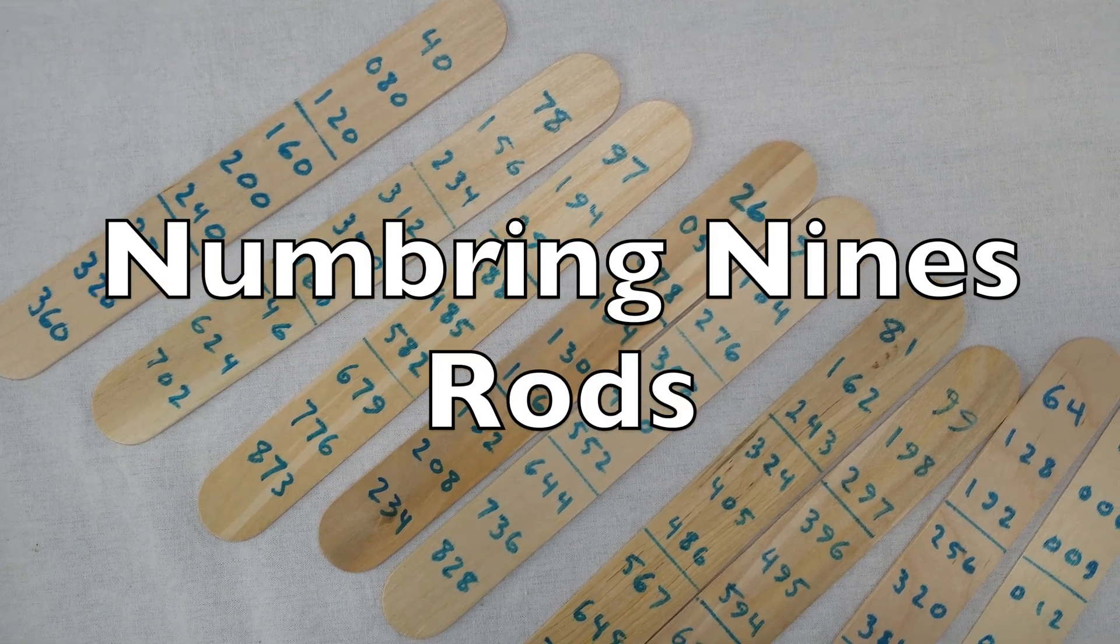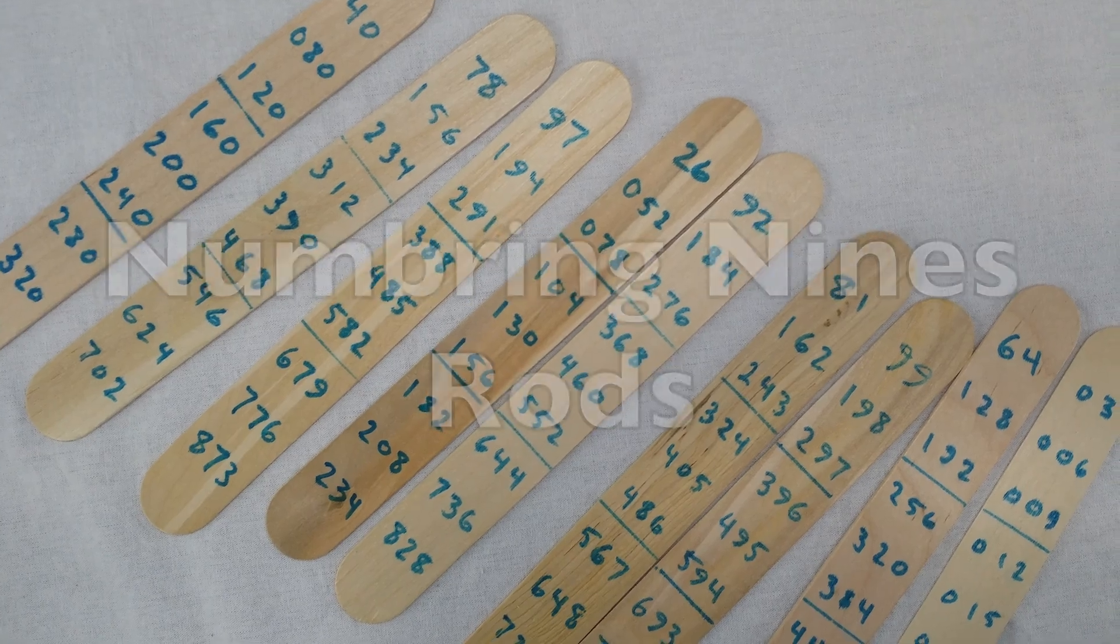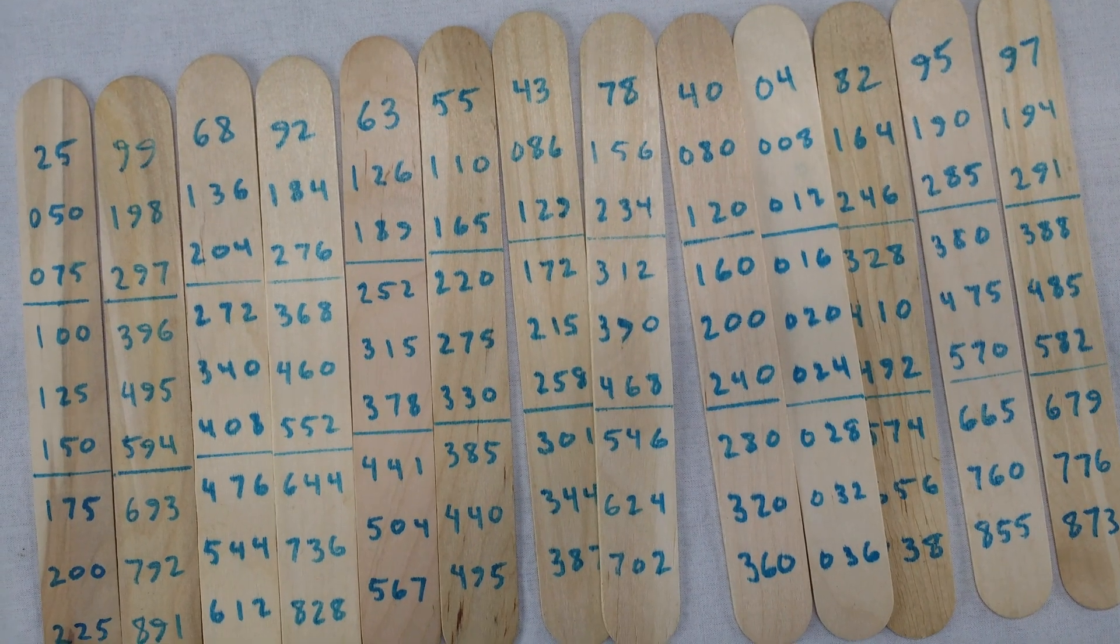This is a set of numbering nines rods invented by Joseph Moxon in 1684. There's a lot of them, so you better keep them organized.